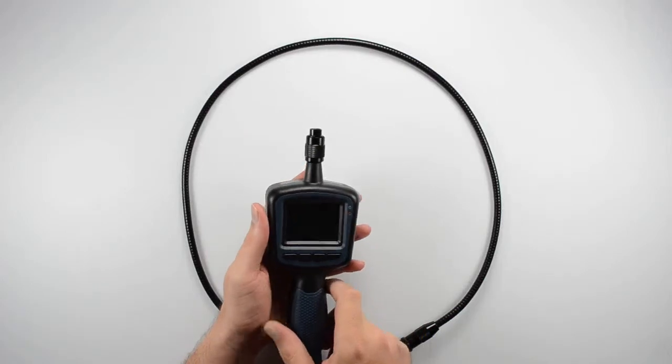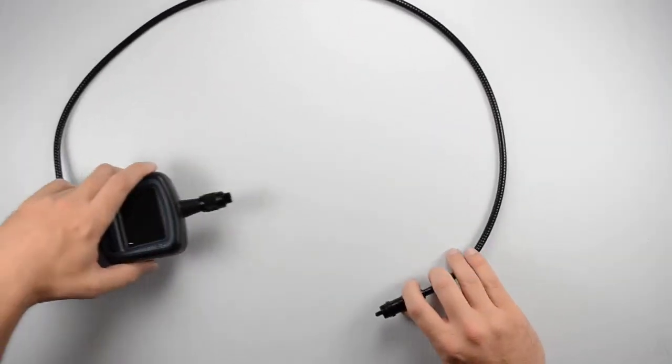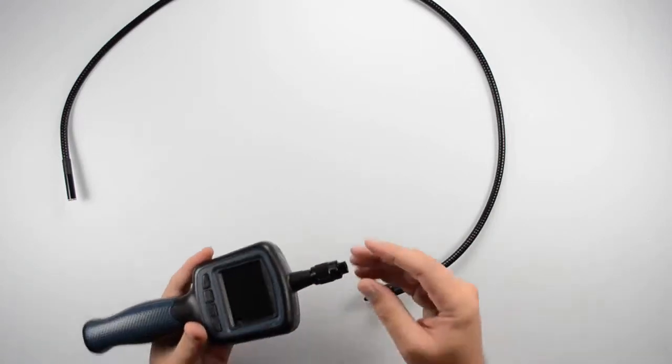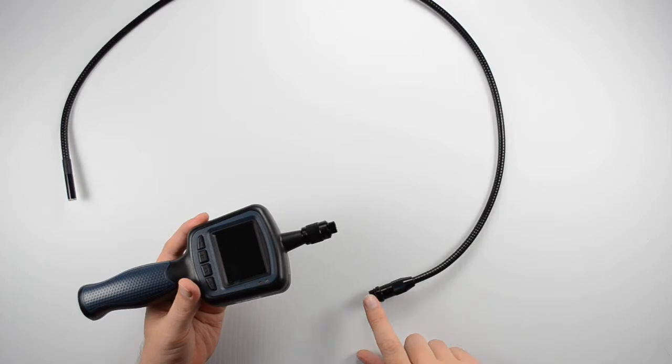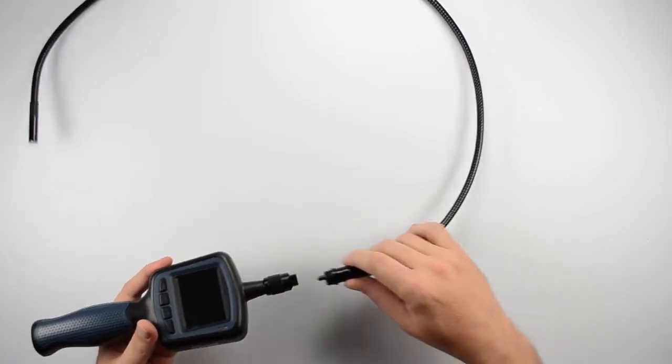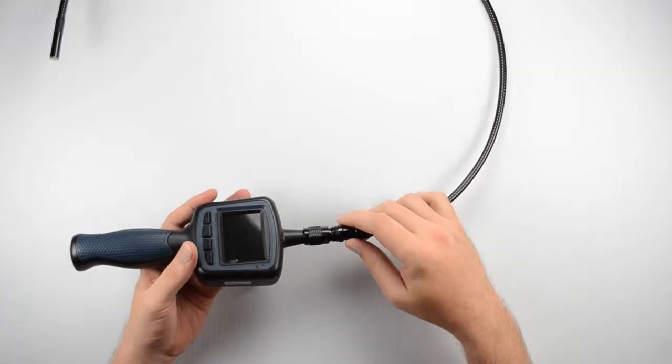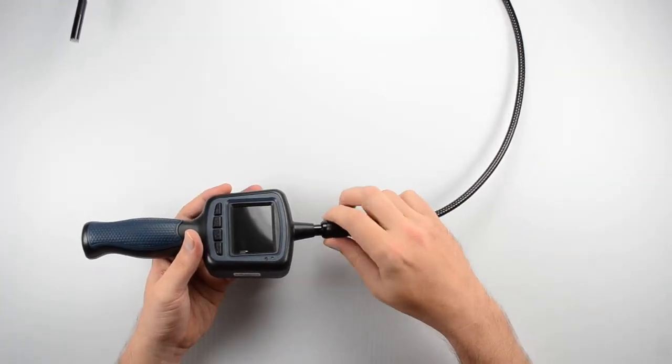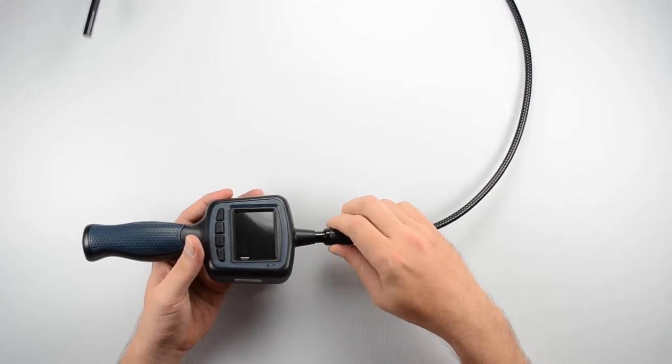This is the hand grip here and this is going to attach to the camera. If you line up this flat area here at the connection with the tab at the end of the camera, they will slide right together like this. Then we're going to slide this collar forward and screw it down nice and tight to make sure we get that watertight connection there as well.